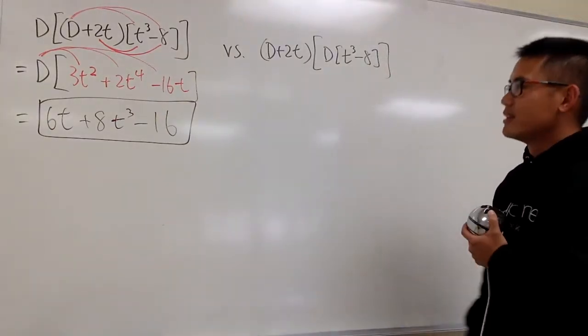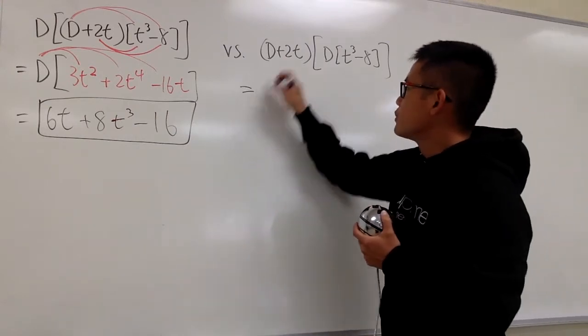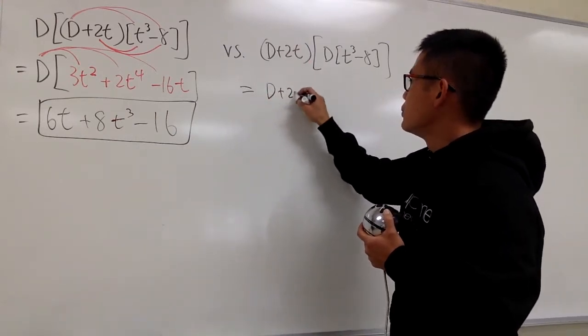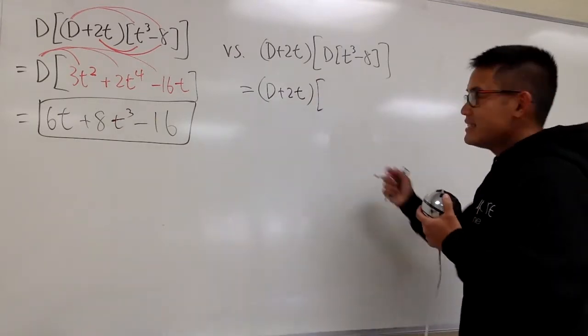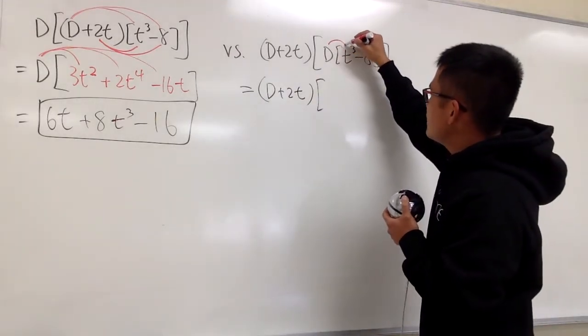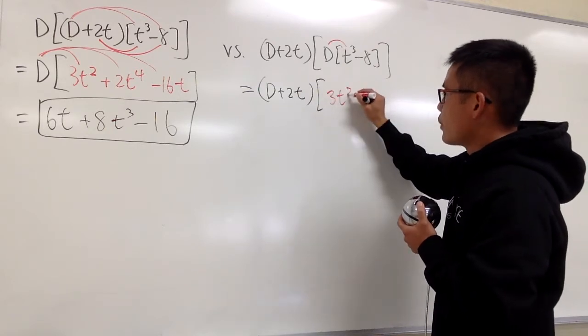What if we switch the order? In this case, let me first write down D plus 2T on the outside. Inside out, we first differentiate T to the third power, which gives us 3T squared.